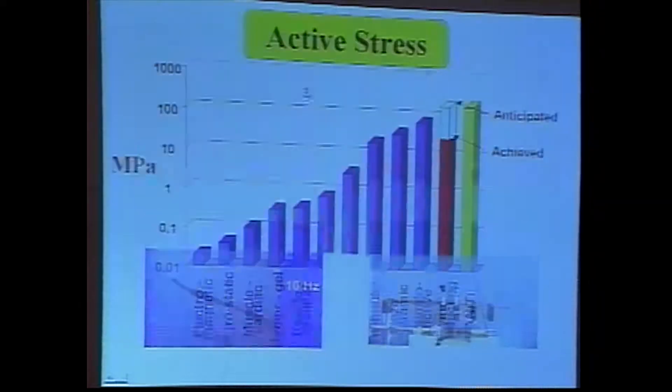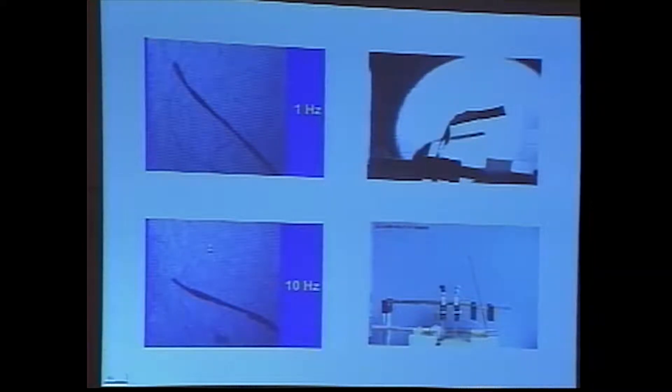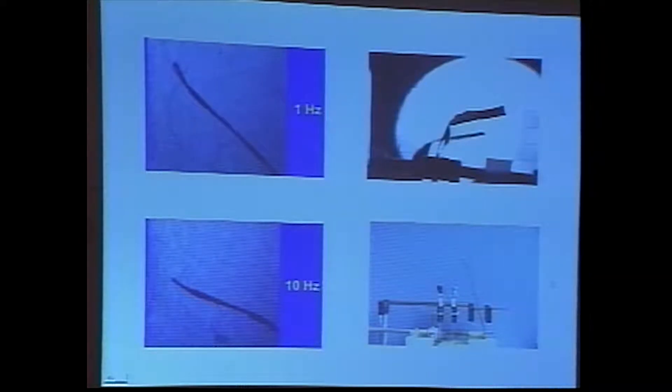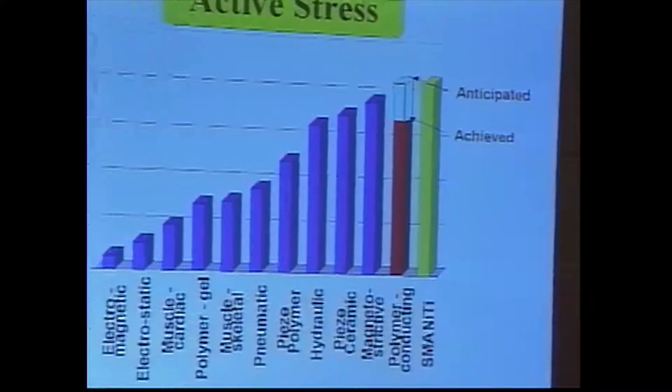We'll show you one of the actuators oscillating at 1 hertz. There's a square wave oscillation. Now, if we can go down to the 10 hertz. So that is now equivalent to fast skeletal muscle. That's a bilayer. And if we can now go to the lower one here, you'll see a linear actuator contracting and causing a small arm to move.